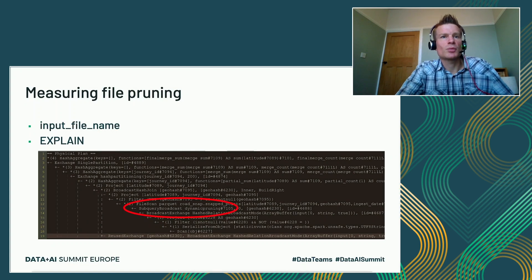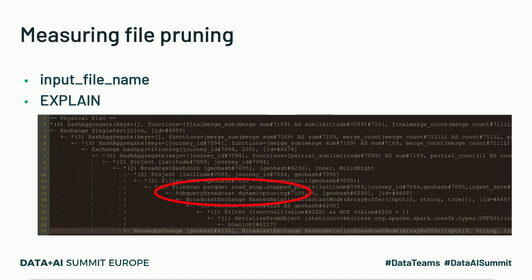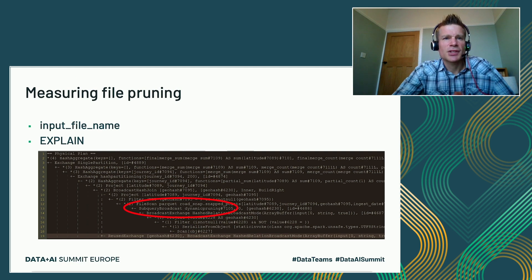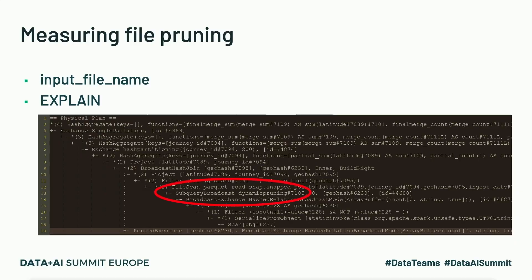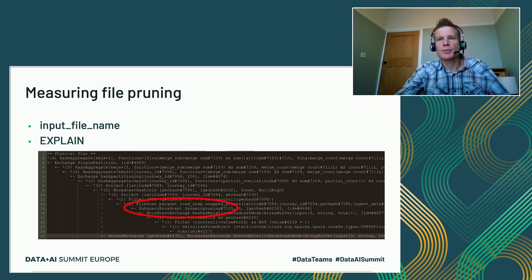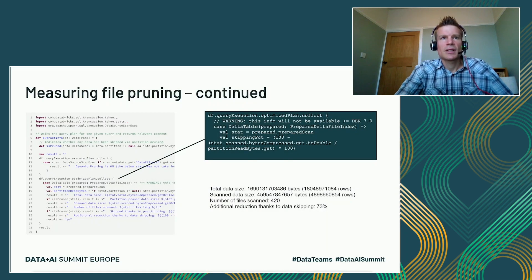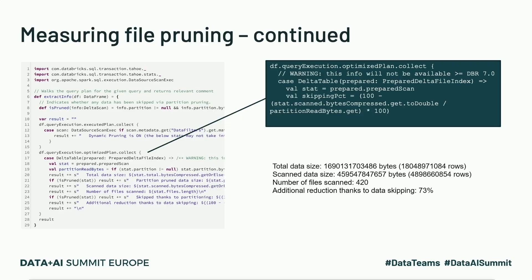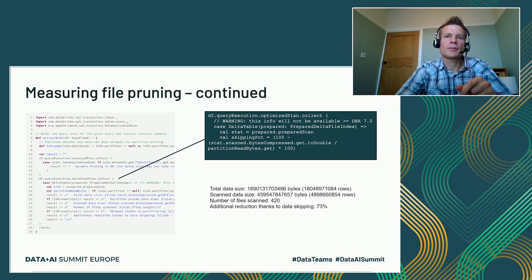How do we measure the effectiveness of file pruning and whether it's even working? We can use the `input_file_name` function as before. We can also check the query plan using `EXPLAIN` and look for the statement `subquery broadcast dynamic pruning` — that indicates Spark is activating dynamic pruning on your query. Another handy Databricks function gives you an indication of the percentage of data skipped by your file pruning strategy, which works for static file pruning.